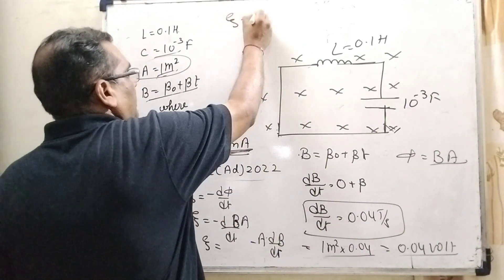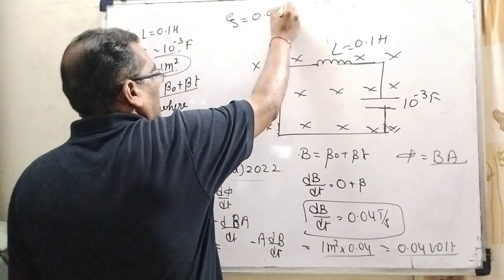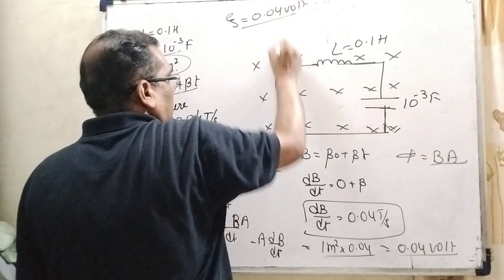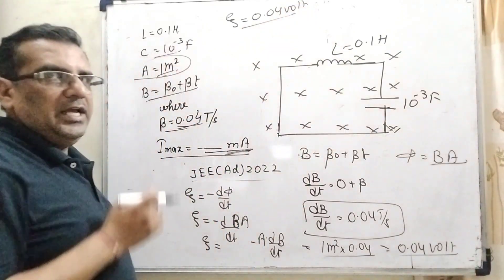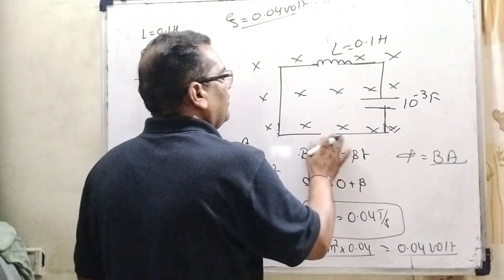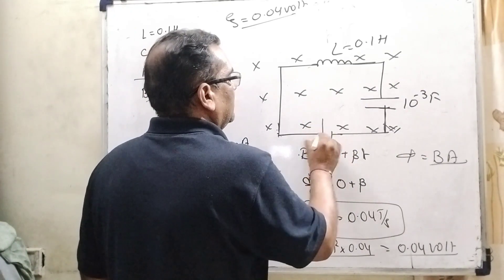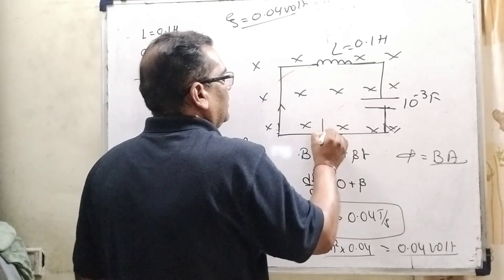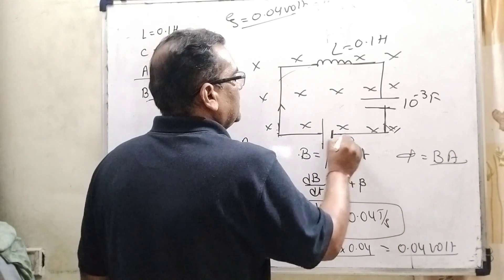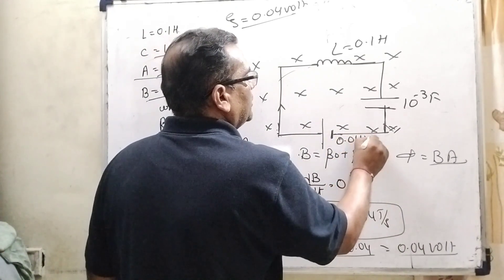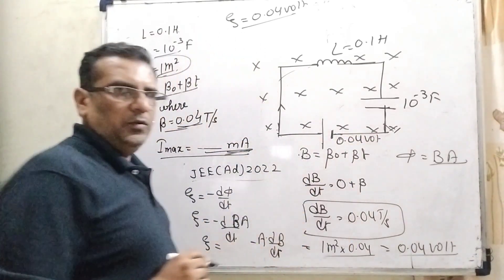That is induced EMF. So here we get induced EMF 0.04 volt that is passing through the circuit, works as a cell or battery. So here we can consider that it works as a cell. Therefore 0.04 volt, that is induced EMF.